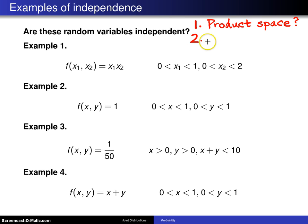If yes, we go to the second question: can the joint probability mass function or probability density function be written as a function of X alone, called G, times a function of Y alone, called H?